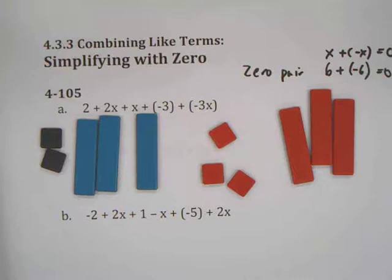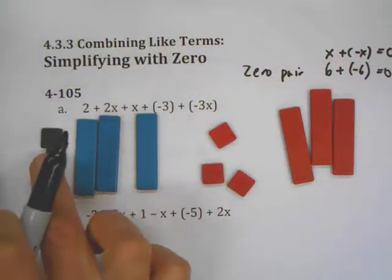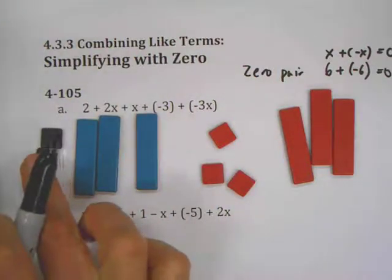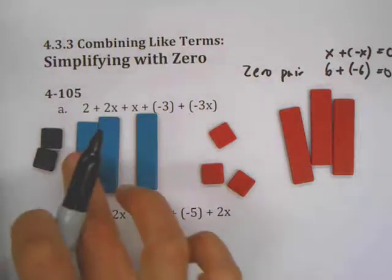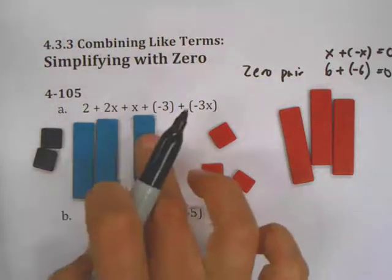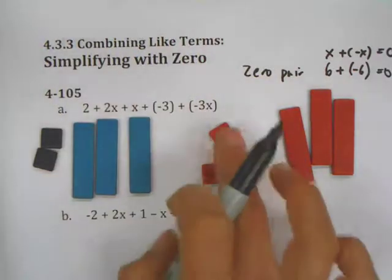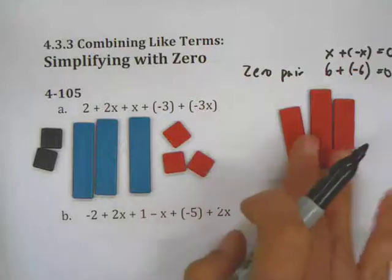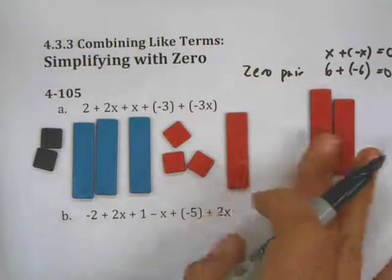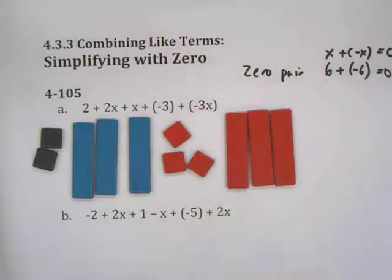I'm going to redo some problems that we did in class today, just in case you're absent or need a little review. So here's two, represented by two dark little unit ones, and 2x represented by an x plus an x. Here's another expression: plus negative three, and then plus negative three x.